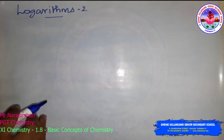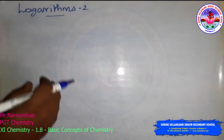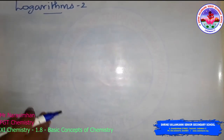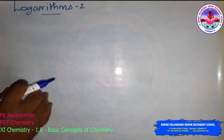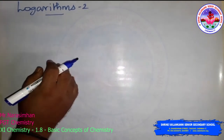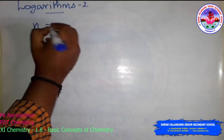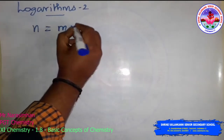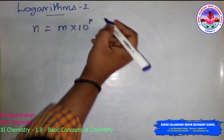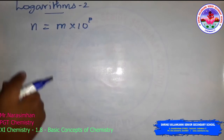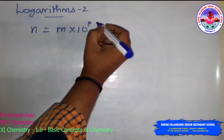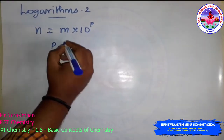Already we were seeing the logarithms here, the continuations of the logarithm. Already we were seeing the standard form of the decimal. Any positive decimal can be written in the standard form, that is n is equal to m into 10 power p. Here, p is an integer.